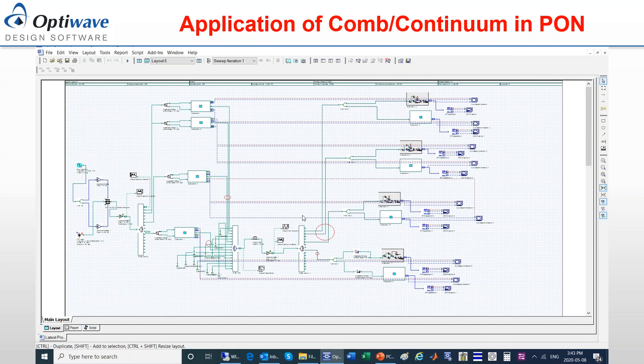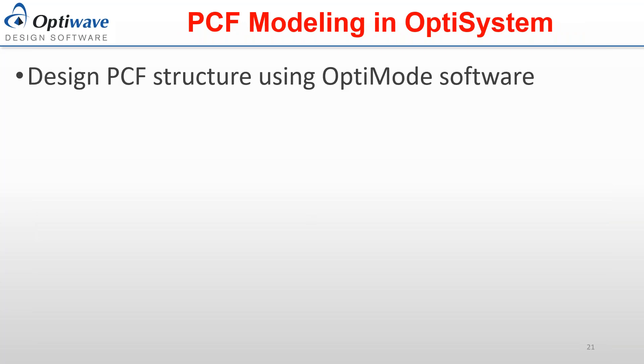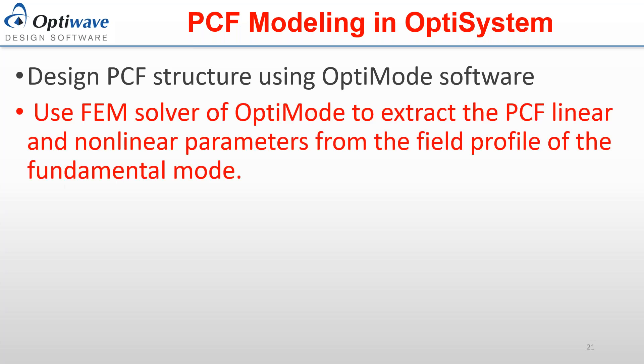Now moving into the main topic: modeling the transmission of signals in photonic crystal fiber using OptiSystem. As Scott was mentioning, you need to design the photonic crystal fiber structure in OptiMode. After that, you extract the parameters related to that structure from OptiMode — which includes the dispersion parameter, group velocity dispersion, third-order dispersion, effective area, nonlinear refractive index, and attenuation.